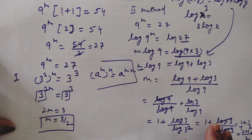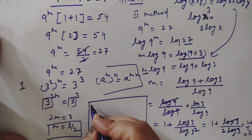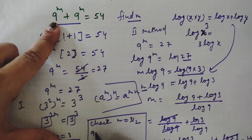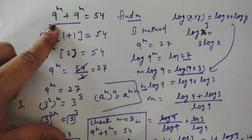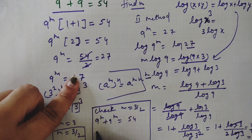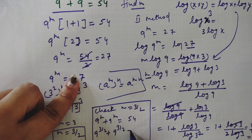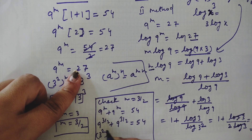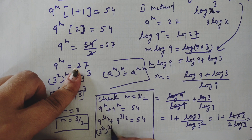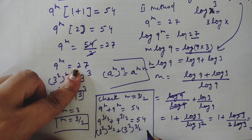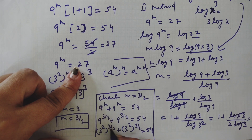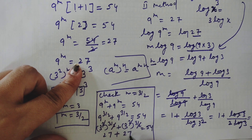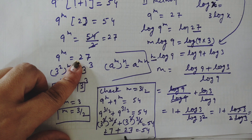Now let's check if our answer is correct. We substitute m equals 3 by 2 into the original equation: 9 to the power 3/2 plus 9 to the power 3/2 equals 54. Writing 9 as 3 squared, we get (3 squared) to the power 3/2, which simplifies as the 2s cancel, giving 3 cubed equals 27. So 27 plus 27 equals 54.